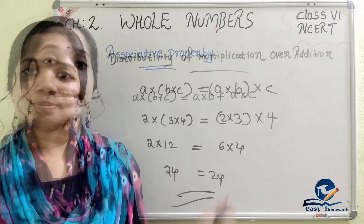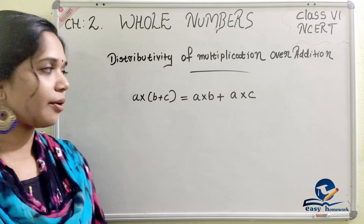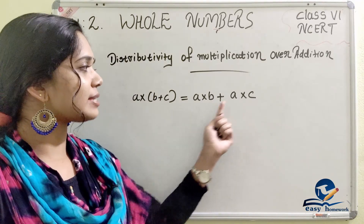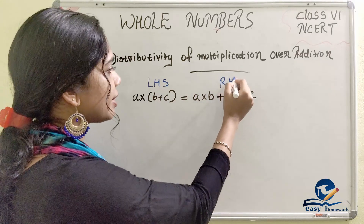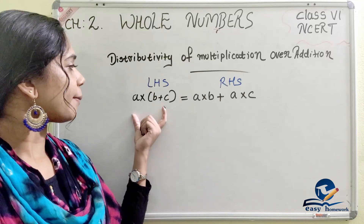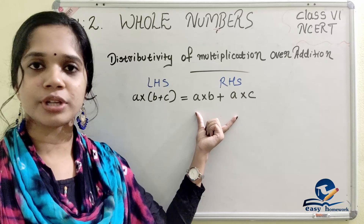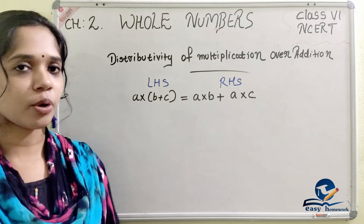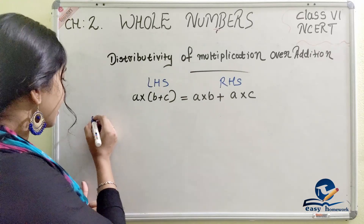Next, we will learn the distributivity of multiplication over addition. A into (B plus C) is equal to A into B plus A into C. LHS stands for left hand side and RHS stands for right hand side. Let's verify this law with numbers.